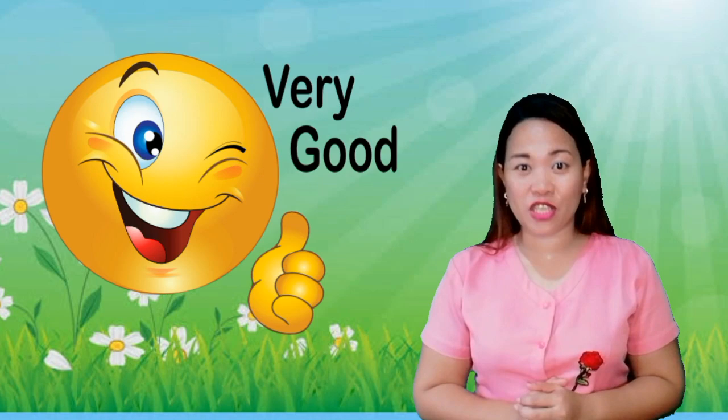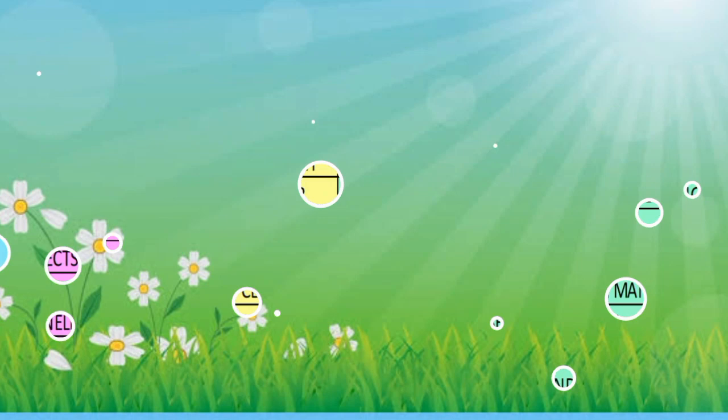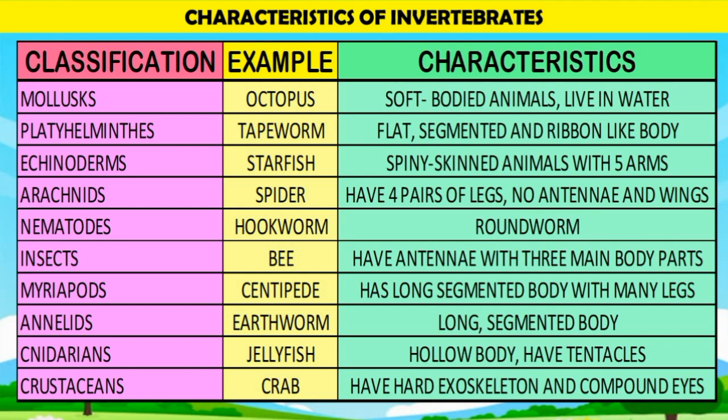Very good, kids! Now, let's make a generalization of the learnings we have gained today. Characteristics of invertebrates: Octopus are mollusks — soft-bodied animals that live in water. Tapeworm are platyhelminths — they are flat, segmented, and with ribbon-like body. Echinoderms have spiny skin and five arms. Example: Starfish.